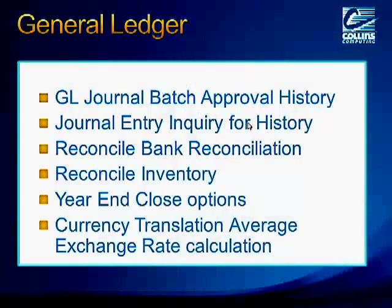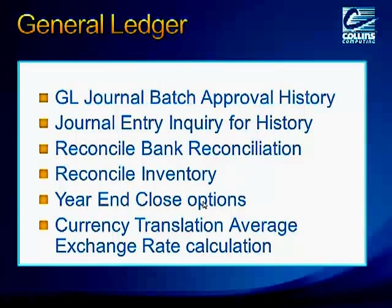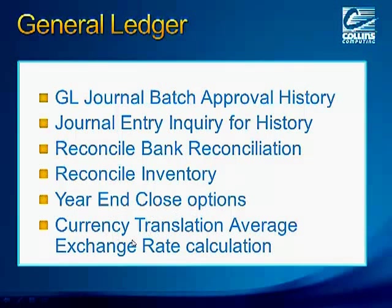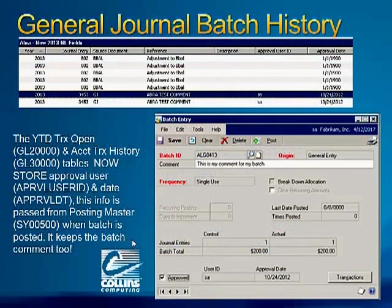In General Ledger there have been quite a few changes. When you have a general journal batch, the approval history stays with it. There are new inquiries for historical journal entry numbers, which was not available in the past. There are reconciliation modules for both bank rec and inventory to reconcile against your general ledger. There have been some year-end closing options for both inactive accounts and unit accounts, and some additional translation calculations available.